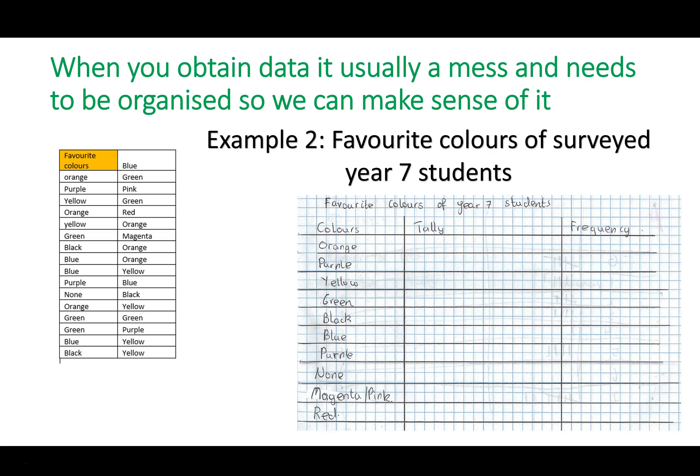When you obtain data it's usually a mess and needs to be organized. In this example we are going to organize the raw data, which is this data right here, into categories because this is an example of categorical data.